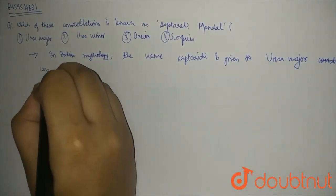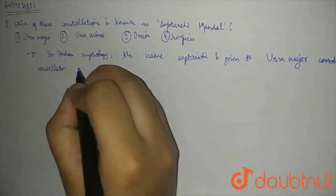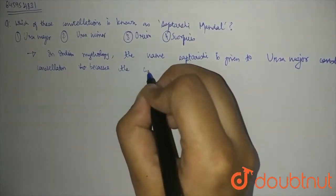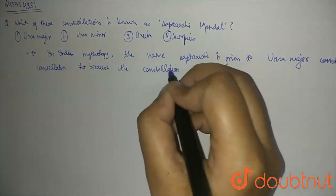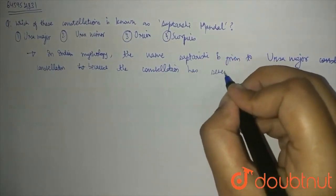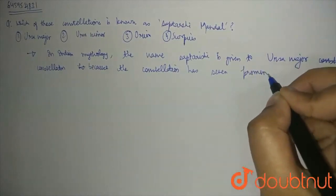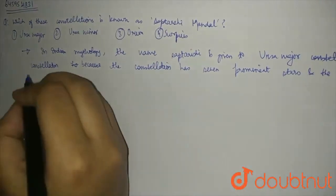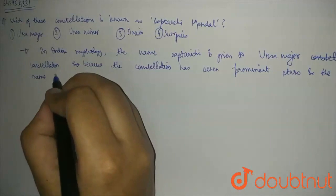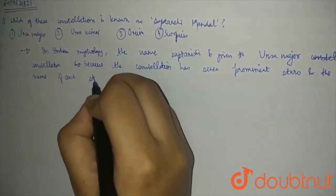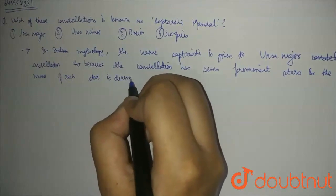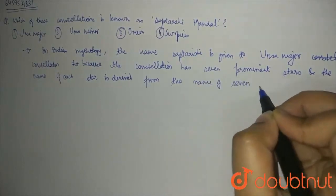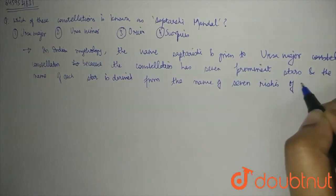So, I will just write constellation here. Constellation, because the constellation has 7 prominent stars. And the name of each star is derived from the name of 7 rishis of India.